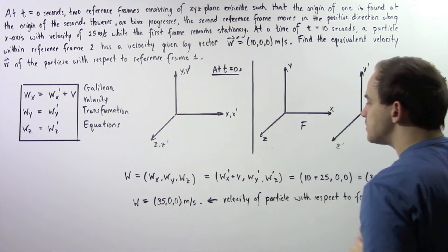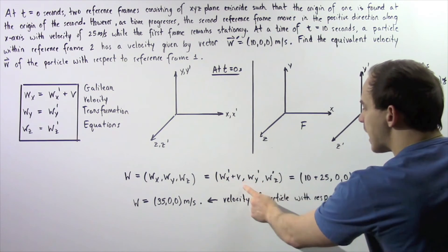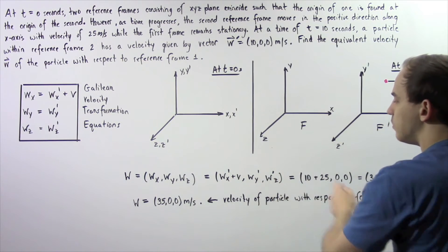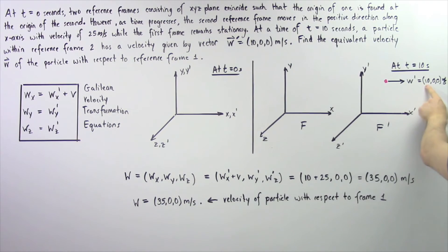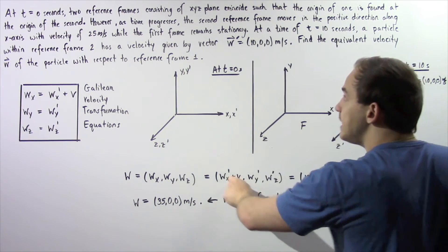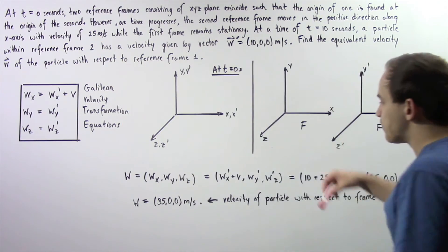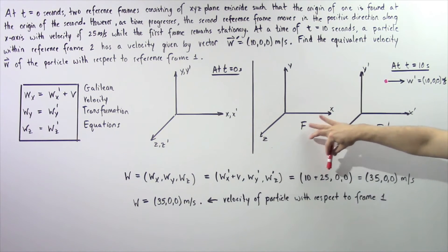So we rewrite it in terms of w_x prime, w_y prime, and w_z prime. Now we know that w_x prime is 10, and we know that v is equal to 25. So this becomes 10 plus 25.